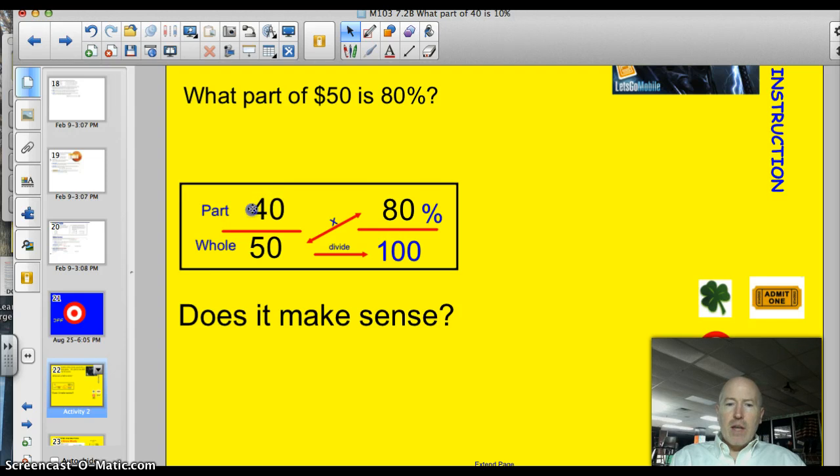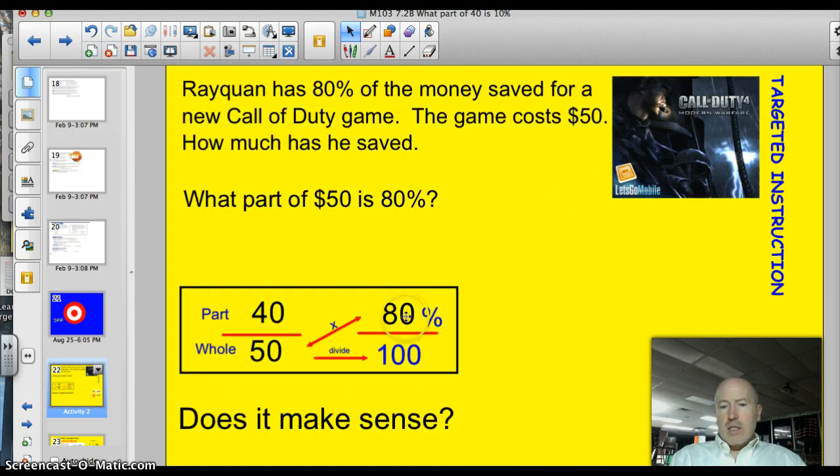Let me just pop that in. Does that make sense? He has 80% of the cost of the game. Would that be equivalent to $40? Yeah, it would because 1 fifth would be $10 and 4 fifths would be $40. So, the answer makes sense. The box worked. Use the box, Luke.